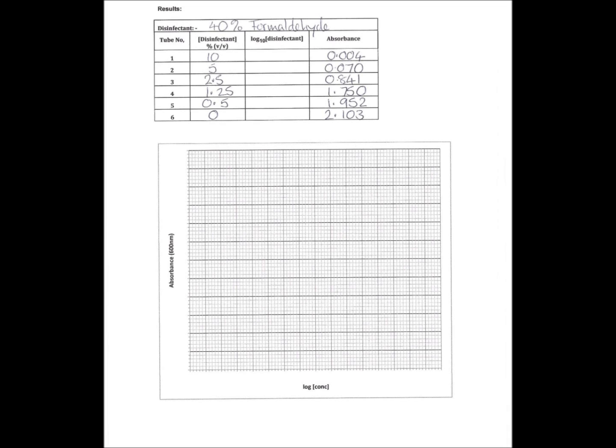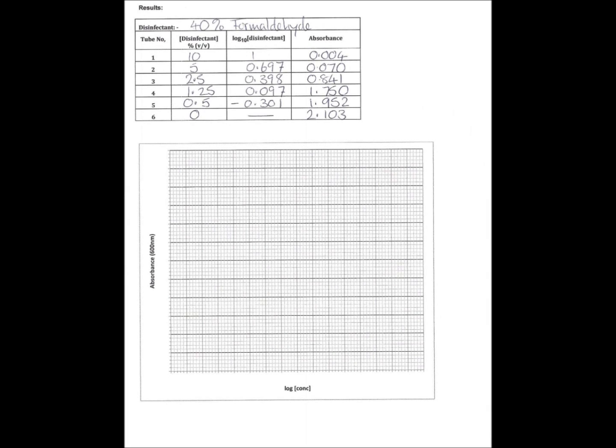Because what we're going to plot is the log 10 disinfectant against the absorbance. I've used the log function on my calculator to calculate the log to the base 10 for each disinfectant concentration. You'll notice that the values are positive when the disinfectant concentration is 1% or above, but when the disinfectant concentration is below 1%, then the log values are negative.